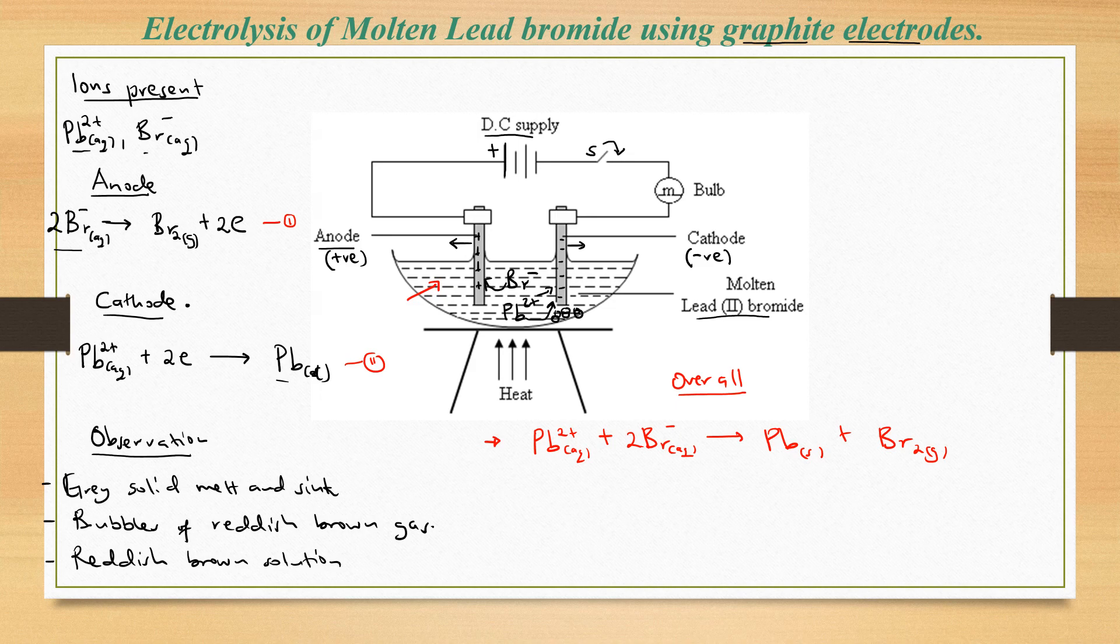Lastly, the last observation possible: if at all we have a bulb in our setup, we shall see the bulb lighting because actually molten lead bromide conducts electricity due to the presence of these two ions here, the lead ions and the bromide ions.